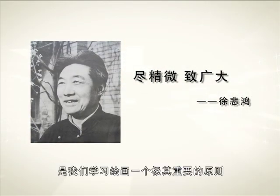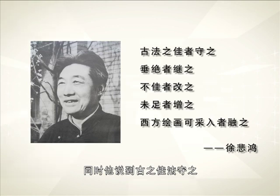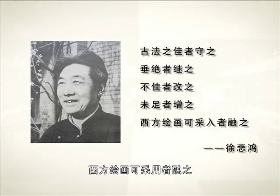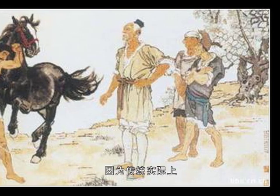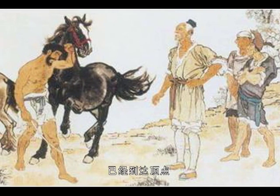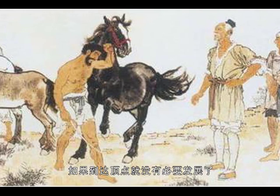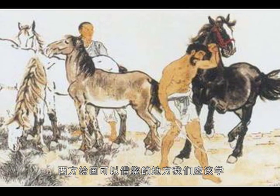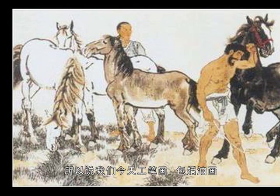徐悲鸿先生是一个真正意义的画马大家。如果把徐悲鸿的《愚公移山》或其他作品都隐去不计，徐悲鸿先生仅凭他的大写意马也能够载入史册。徐悲鸿先生不单是一个画马的高手，而且对中国美术理论有着极其重要的贡献。比如他谈到'精、气、神自广大'，这是我们学习绘画一个极其重要的原则。同时他说到：'古之佳法，守之；垂觉者，继之；不佳者，改之；未足者，增之；西方绘画可采用者，融之。'简单解释：古人好的东西留下来，马上要断代的东西继承下来，不好的糟粕去掉，表现不尽人意的地方今天的人应该补充，西方绘画可以借鉴的地方应该学习。